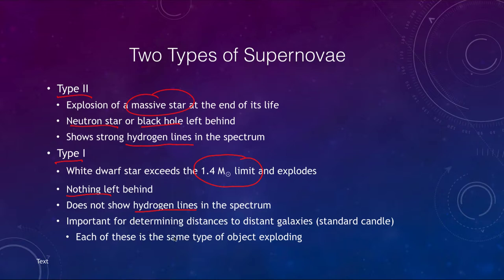Type 1 supernovae are extremely important for determining distances to distant galaxies — they are what we call standard candles. Every single time one occurs, it is the same type of object exploding: a 1.4 solar mass white dwarf star. So there should be little difference between them when they explode. We should see the same brightness and the same patterns in their light curves, which means we can use them to determine distances because they all reach the same maximum brightness.